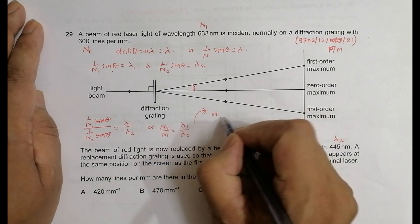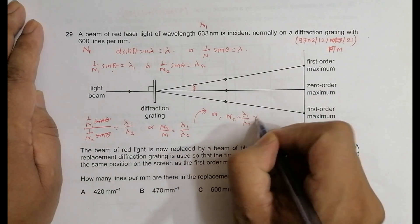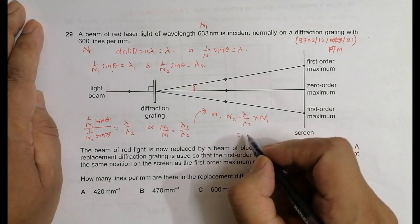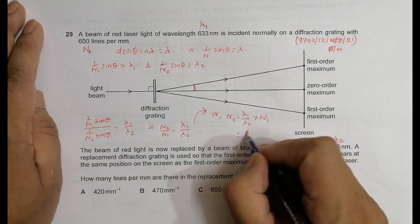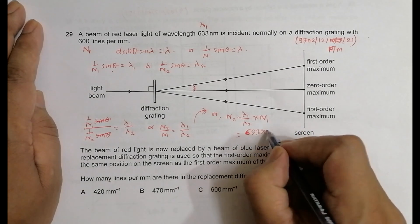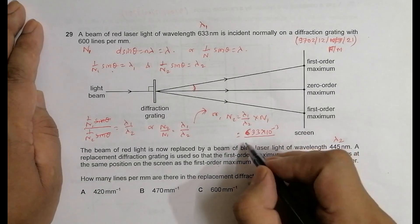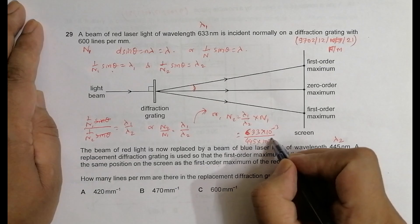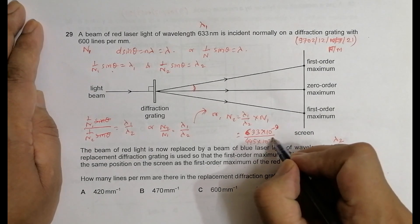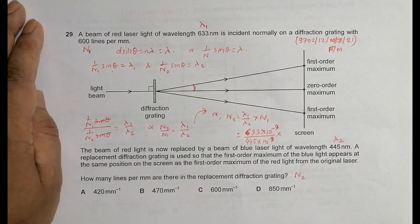So lambda 1 is 633 nanometers—nano means 10 to the power minus 9. Lambda 2 is 445 times 10 to the power minus 9. Then we have n1, which is 600 lines per millimeter.